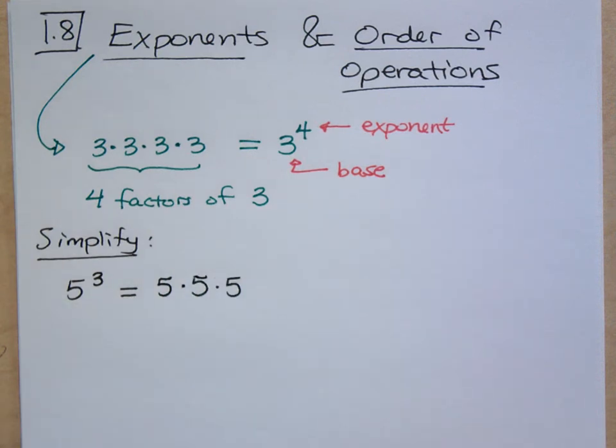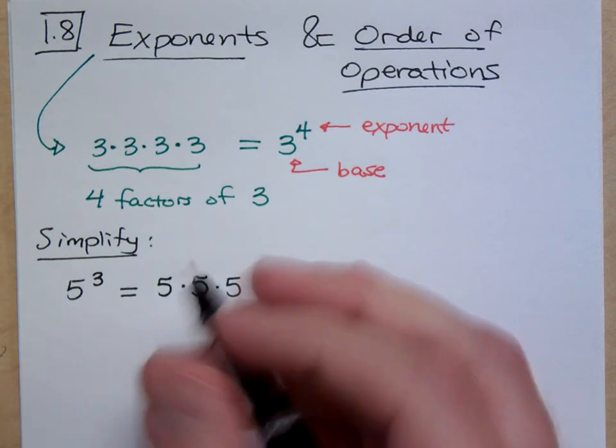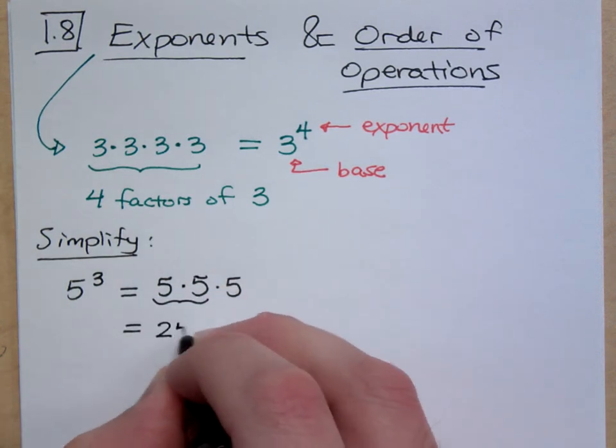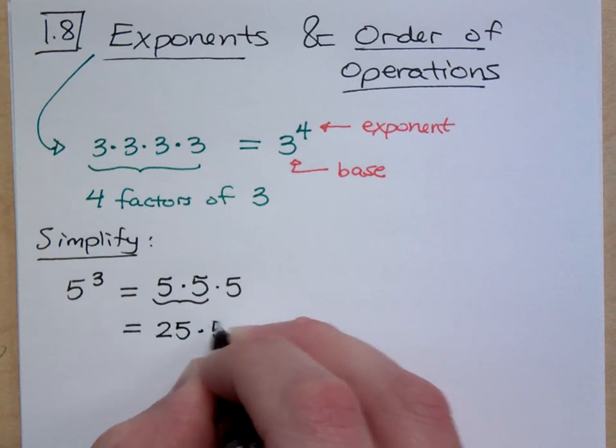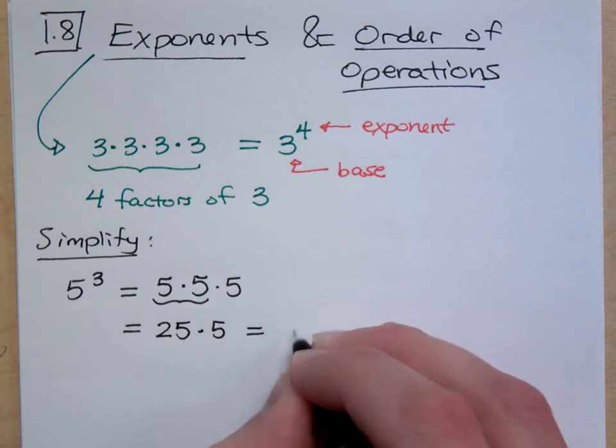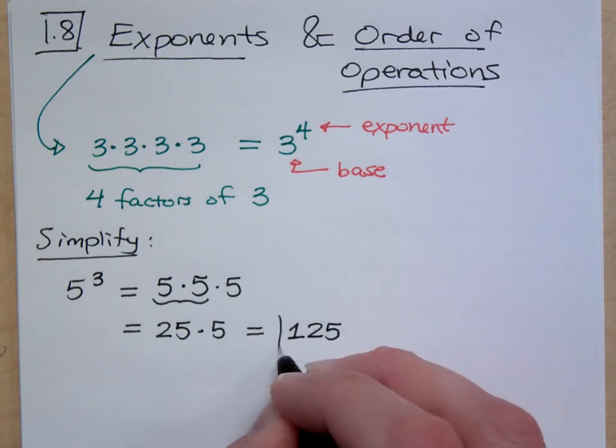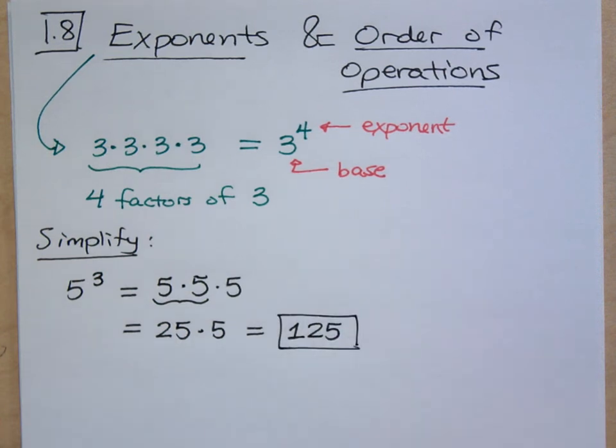This is just multiplication, nothing to freak out about. What is 5 times 5? So that's 25 times 5, and you get 125. You would not believe how many students think that 5 to the 3rd is 15 or even 75. It's 5 times 5 times another 5.